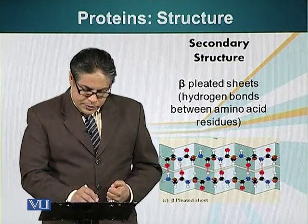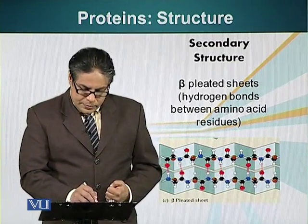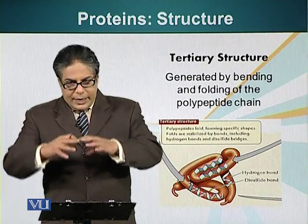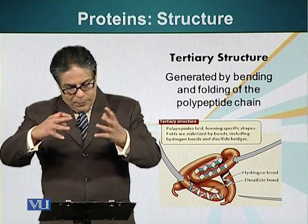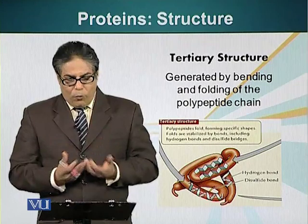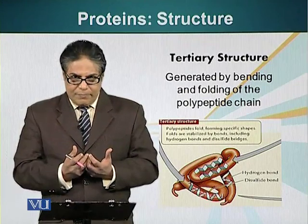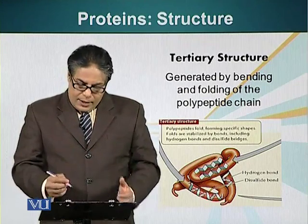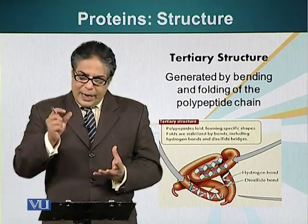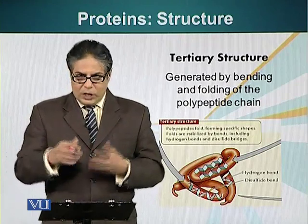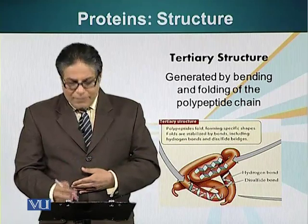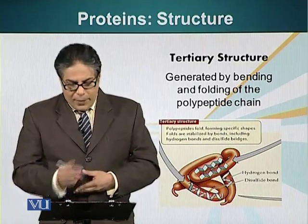Tertiary structure is basically the manner in which the whole protein folds upon itself. This tertiary structure can have smaller domains, which are composed of secondary structures — alpha helices or beta sheets.